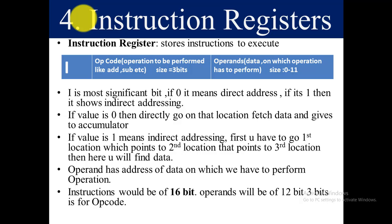An instruction is 16 bits in total. The operands portion is 12 bits, because it holds memory addresses and addresses in this example are 12 bits (0 to 11). The opcode is 3 bits. The remaining 1 bit is for I, the most significant bit. So in short, one instruction is 16 bits, and the instruction register stores instructions that need to be executed.